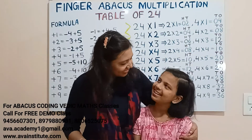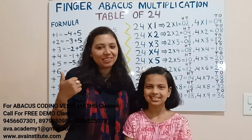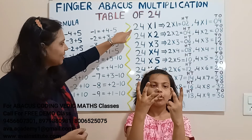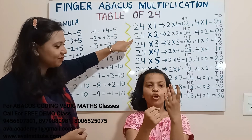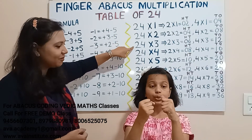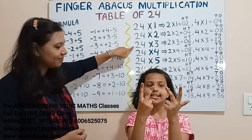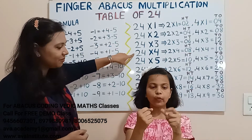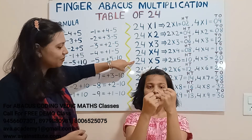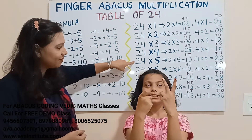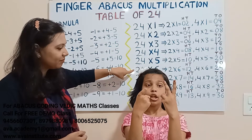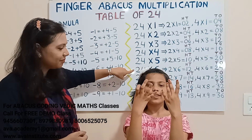Hi friends! Ready Kritika? Yes, I am ready. Friends, are you ready? 24 ones are: 2 ones are 2, 4 ones are 4 — 24. 24 twos are: 2 twos are 4, 4 twos are 8 — 48. 24 threes are: 2 threes are 6, 4 threes are 12 — 72. 24 fours are: 2 fours are 8, 4 fours are 16 — 96. 24 fives are: 2 fives are 10, 4 fives are 20 — 120. 24 sixes are: 2 sixes are 12, 4 sixes are 24 — answer is 144.